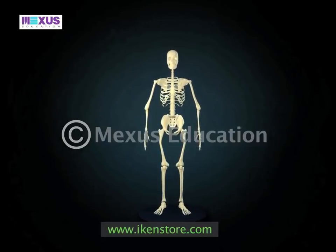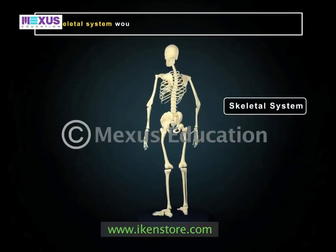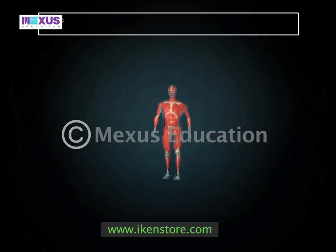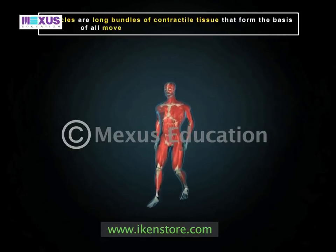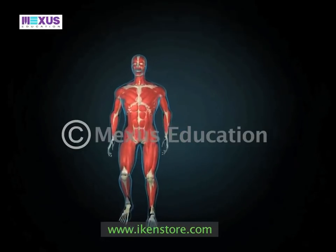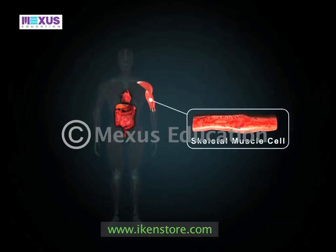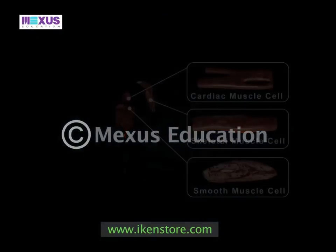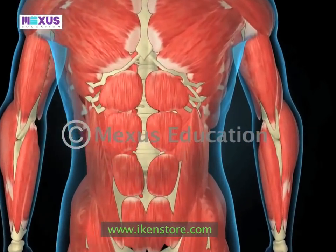The bones and joints form an important part of the skeletal system; however, they would be incomplete without muscles. Muscles are long bundles of contractile tissue that form the basis of all movements and give contour to the body. The three important types of muscles found in the human body are skeletal muscles or striated muscles, cardiac muscles, and smooth muscles.